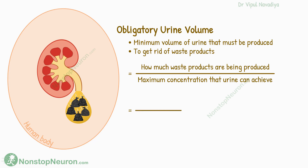An average person produces 600 milliosmoles of waste products every day, and kidneys can achieve a maximum urinary concentration of 1200 milliosmoles per liter. So the obligatory urine volume is 0.5 liters per day — a person needs to excrete at least 0.5 liters of urine every day to get rid of all the waste products.